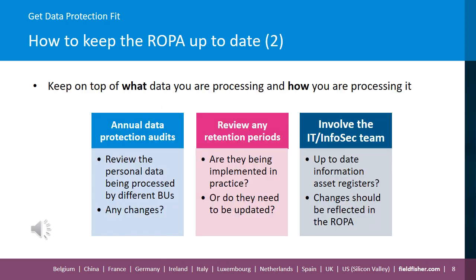You need to keep on top of what data you are processing and how you are processing it. When initially creating your ROPA, you will almost certainly have had to undertake a data mapping exercise — carrying out some form of information audit to find out what personal data your organisation holds and for what purposes. An annual data protection audit is a continuation of this initial data mapping exercise. During the audit, you review the personal data being processed by the organisation across the different business units and the related data processing purposes, and check for any changes.